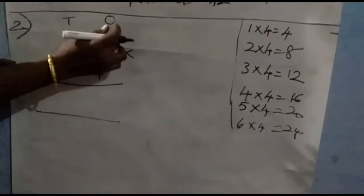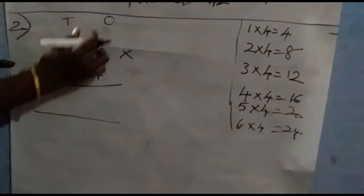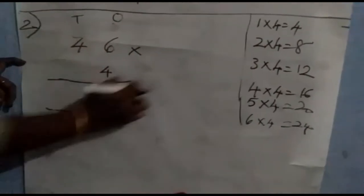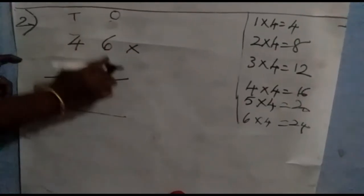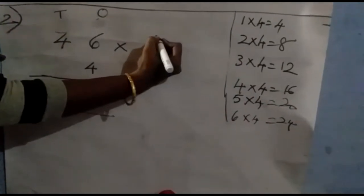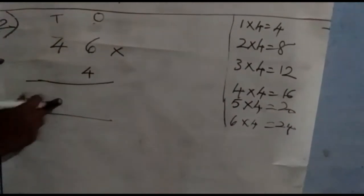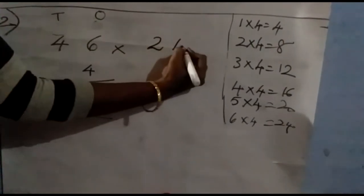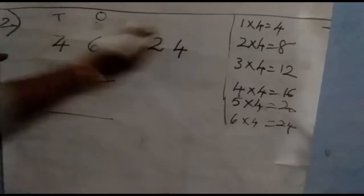Start to multiply from the ones place. Six fours are twenty-four. Twenty-four is a two-digit number, so you can't write it directly here. Write it on the side of the sum.